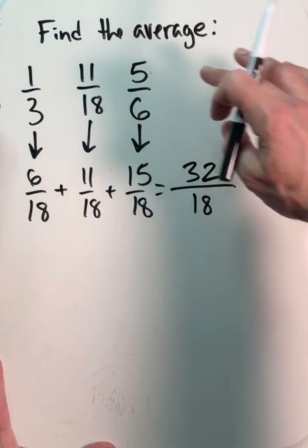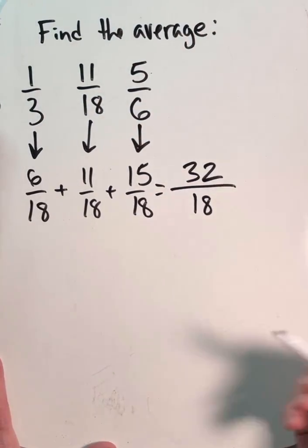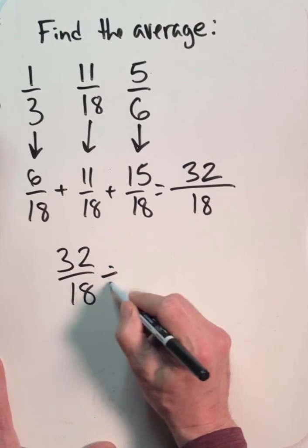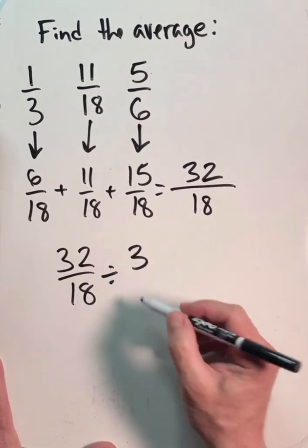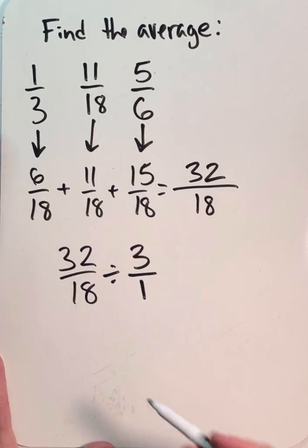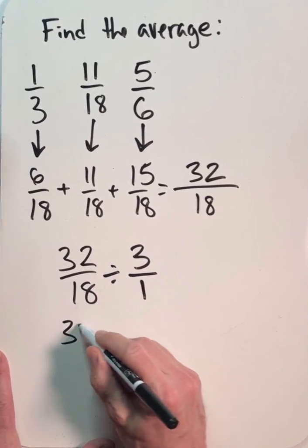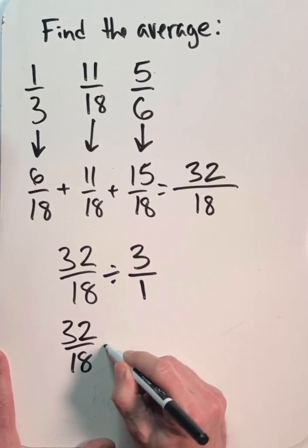Now, in order to find the average, we need to then divide that number by 3. So when we take 32/18 and divide it by 3, let's turn that whole number into a fraction and then follow our algorithm or our process for dividing fractions, which is, once again, to multiply by the reciprocal.